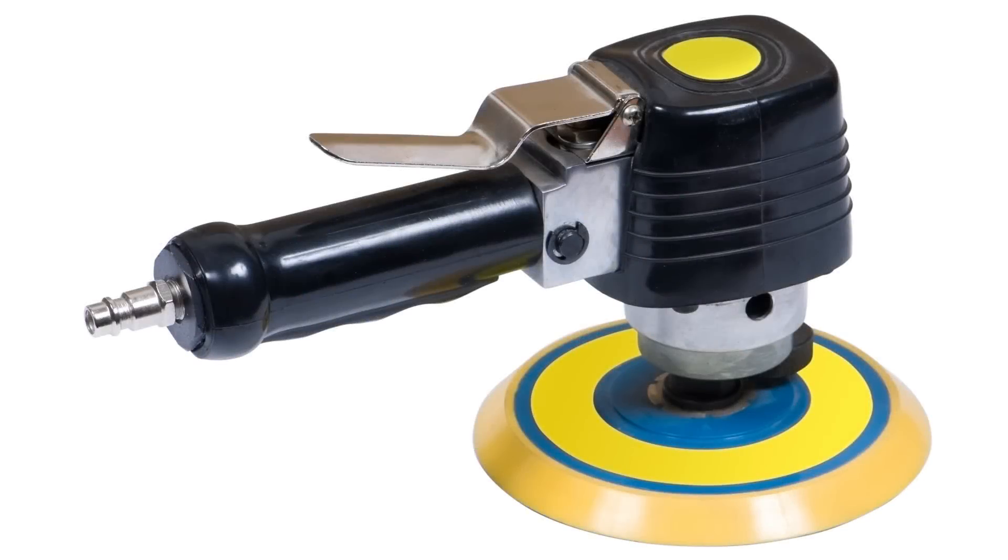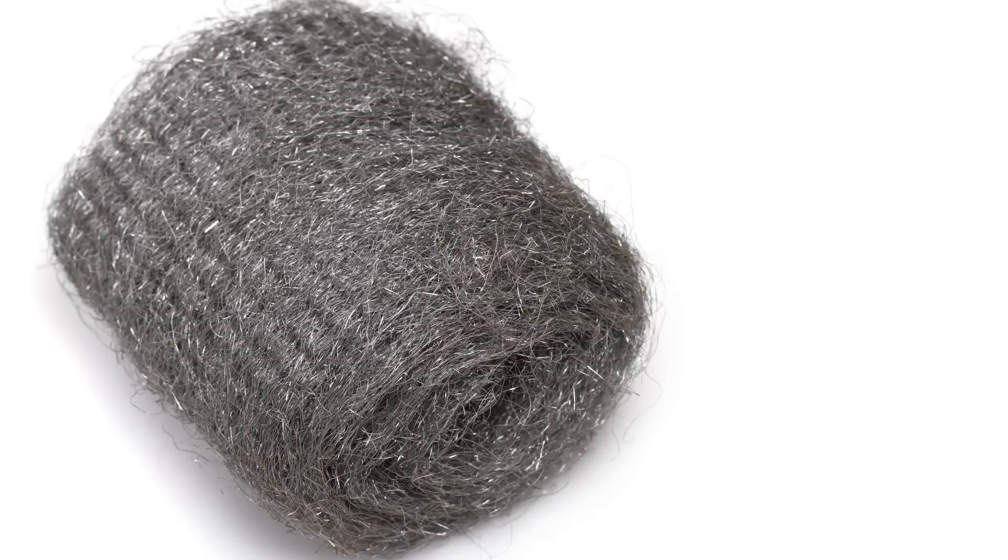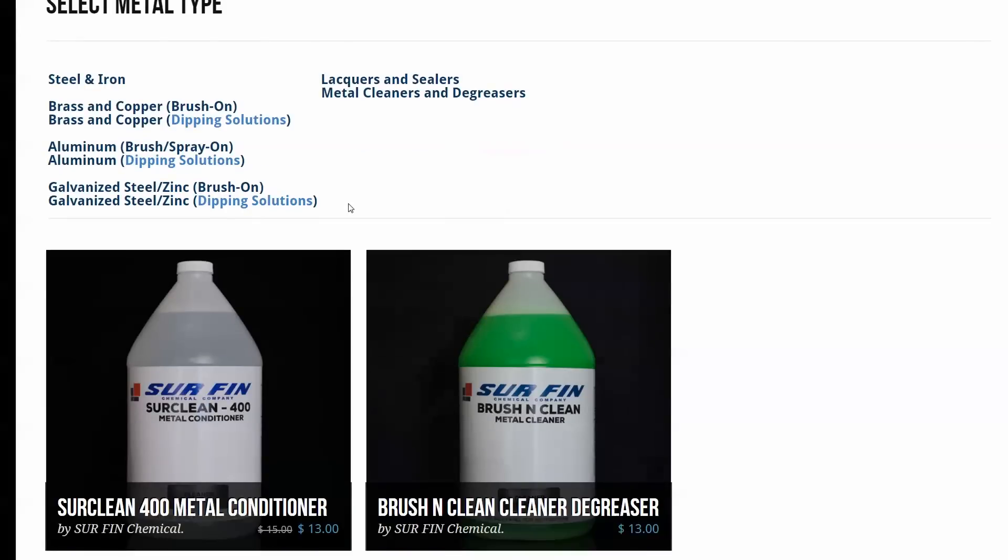To prepare your metal, it's recommended to use common sanding tools or even steel wool to descale your part. But for large parts and for convenience, it's recommended to use a metal prep solution like Circlean 400.